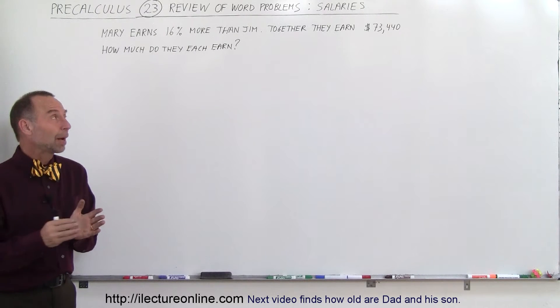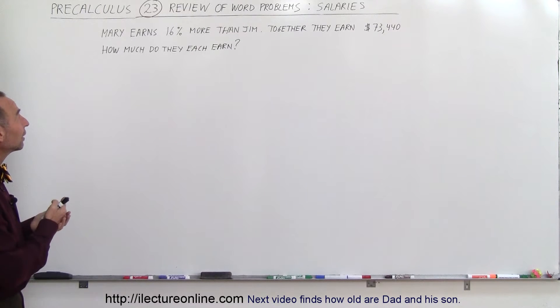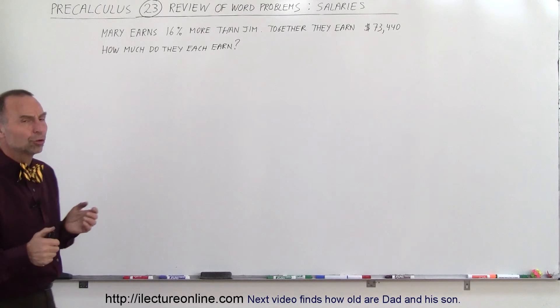Welcome to ElectronLine and our next word problem is one dealing with salaries. Mary earned 16% more than Jim and together they earned $73,440. How much do they each earn?